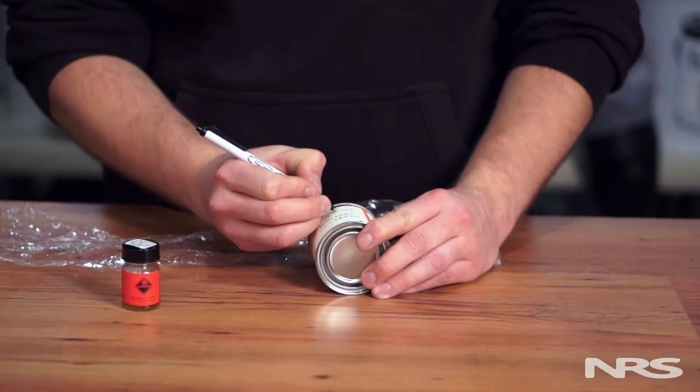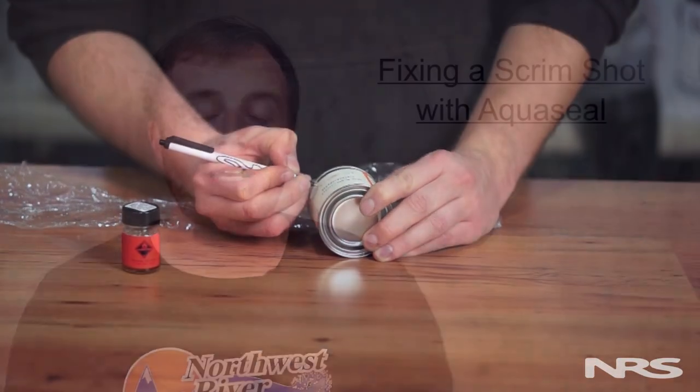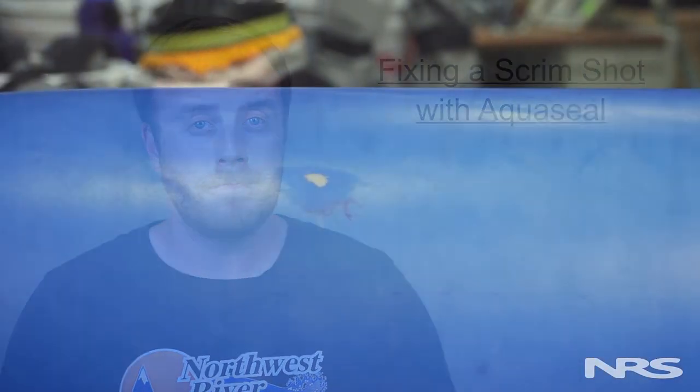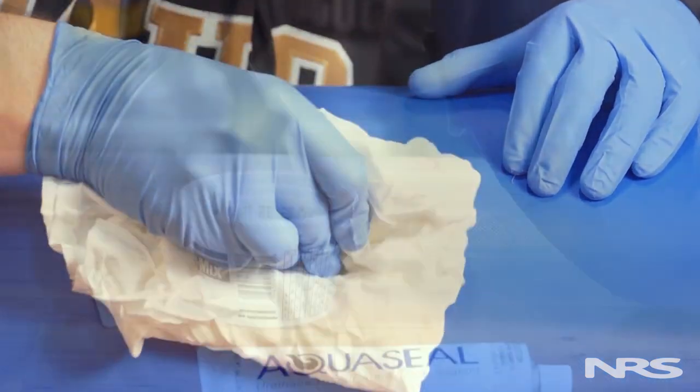In some instances you may have a scrim shelf - an area in the PVC, urethane, or Hypalon that has been rubbed through to reveal the scrim or fabric beneath. If it covers a large enough area you may want to lay down a patch. However, doing the proper prep work and painting a thin layer of AquaSeal will also help protect it.